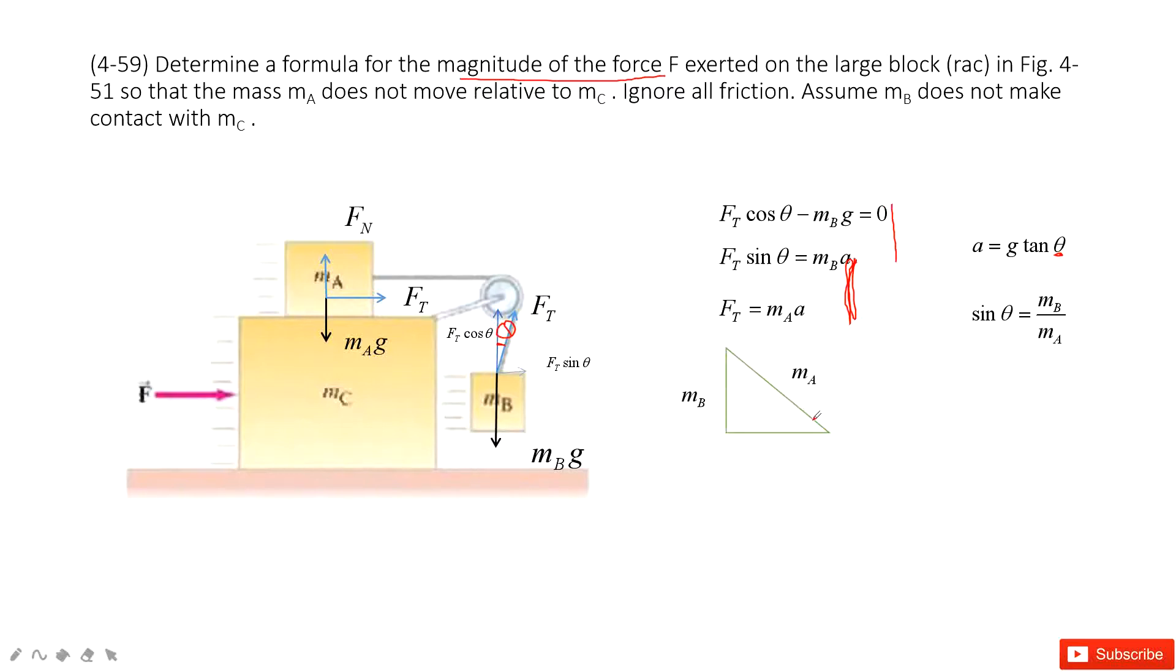so this angle is theta. Agree? Because sine theta is MB divided by MA. And then we can see this is the right angle. So you can get this side is squared MA squared minus MB squared. Now can you find tangent theta?